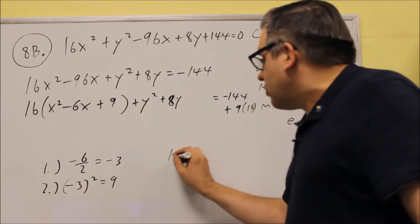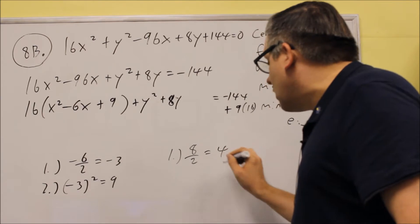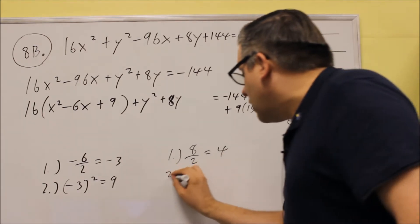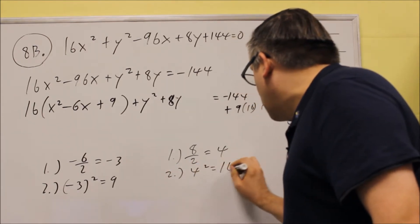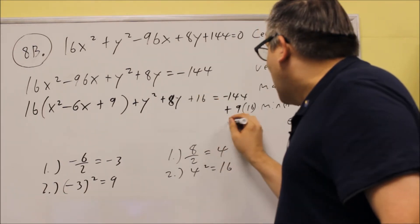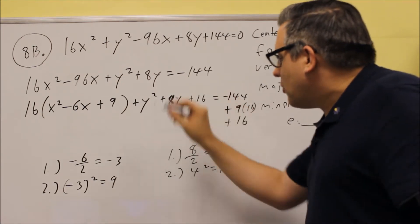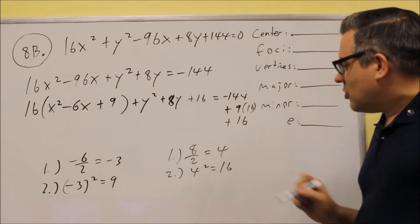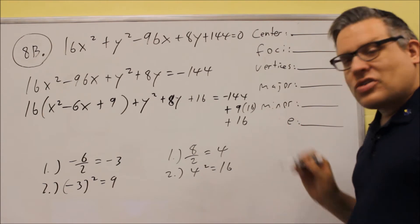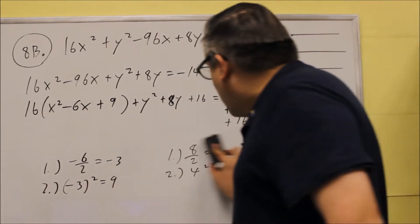Next we want to do complete the square with this one here. We're going to take 8, we want to divide it by 2 and we get a 4. And then you want to square the 4 and you get 16. Now this one, you can just add 16 because there's no number in front like we had before. So in this case we're just going to add 16 only, because there's nothing outside there that we have to pull out.